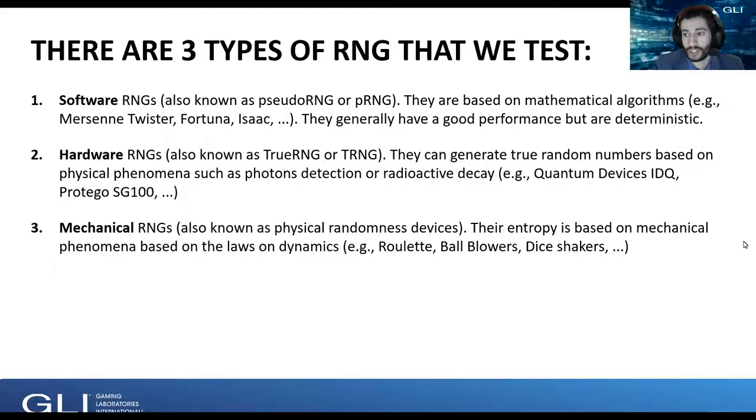When we test RNGs, we find that there are mainly three types. One category known as software RNGs, also known as pseudorandom generators, PRNGs. They are based on mathematical algorithms. Maybe you heard about the KISS algorithm, Mersenne Twister, Isaac, others. Usually, they have very good performance in terms of statistics, but they are deterministic since they are driven by an algorithm.